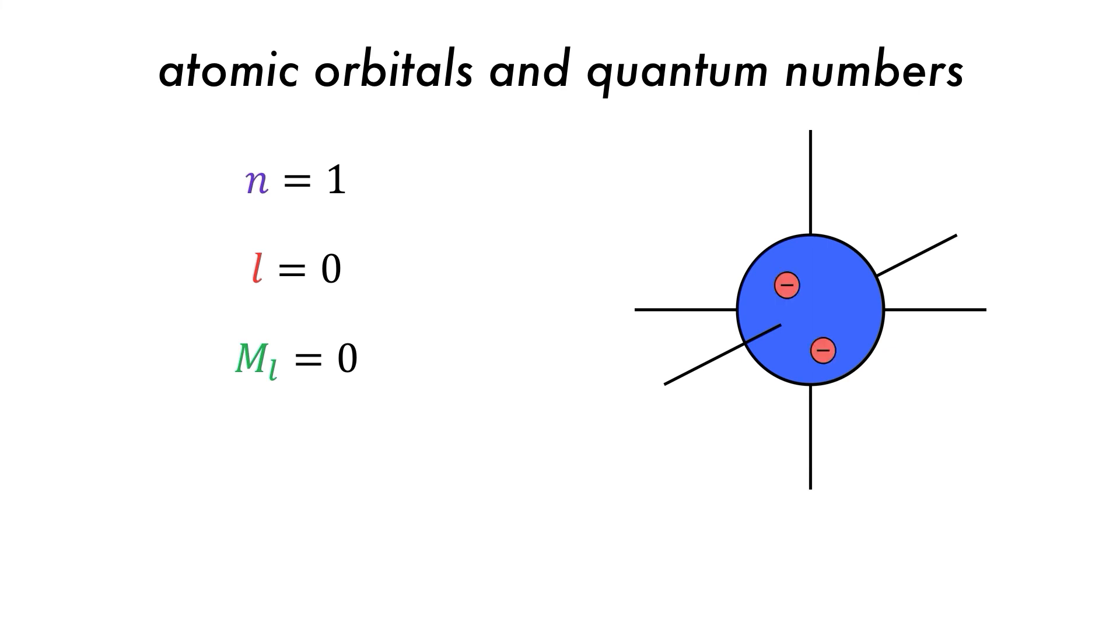This orbital can accommodate up to two electrons, with ms values of either plus a half or minus a half. The 1s orbital is the lowest energy orbital, and all atoms on the periodic table fill this orbital first.